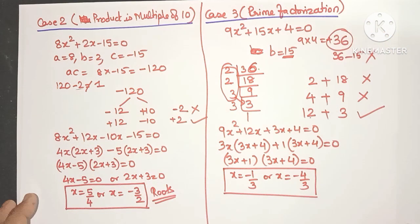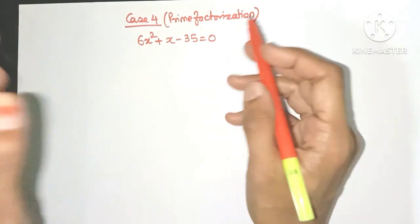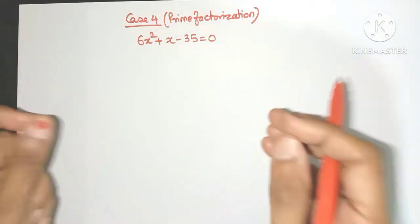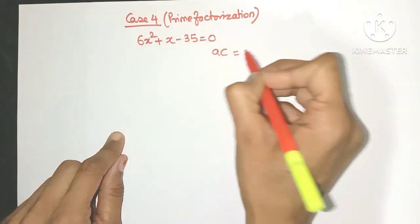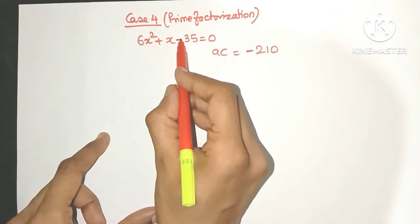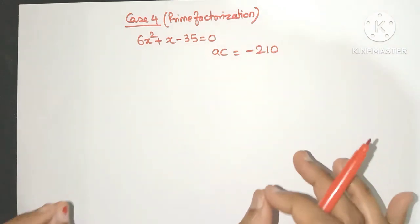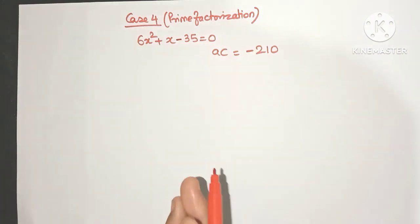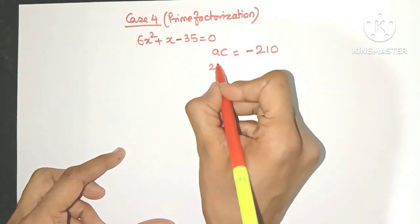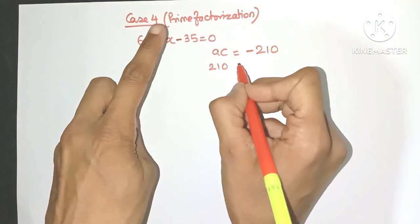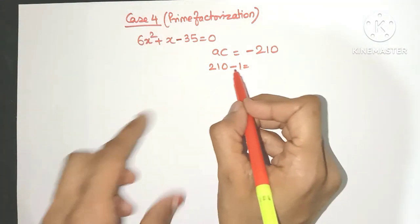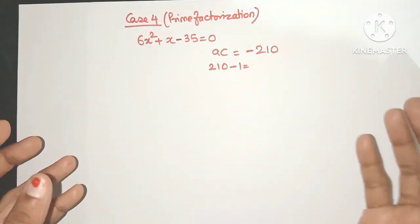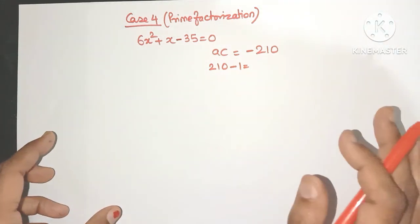Now let's come to the last case, Case 4. Consider this quadratic equation. The product of a and c is minus 210 — always consider the sign. Can we use Case 1? When I subtract 210 from the middle term b, the difference will not be 1, so Case 1 will not work.